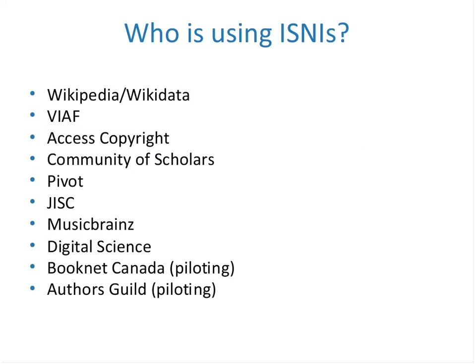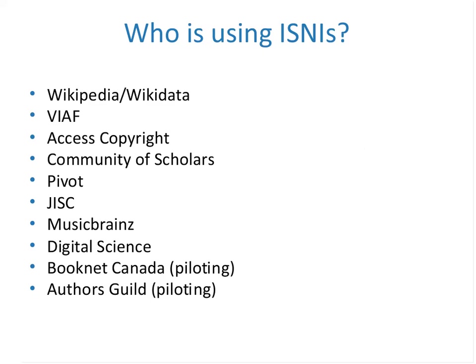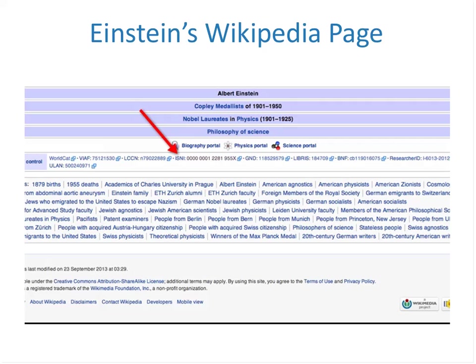Who's using ISNIs? Wikidata, VIAF, Access Copyright, the ProQuest products Community of Scholars and Pivot, MusicBrainz, Digital Science, and a pilot at Bowker with BookNet Canada and the Authors Guild. Here's an example of an ISNI in the wild — Einstein's Wikipedia page. In the authority control section at the very bottom, you see his VIAF ID, the LCCN, and the ISNI. The ISNI is a link; if you click on it, it takes you to the ISNI page for Einstein.